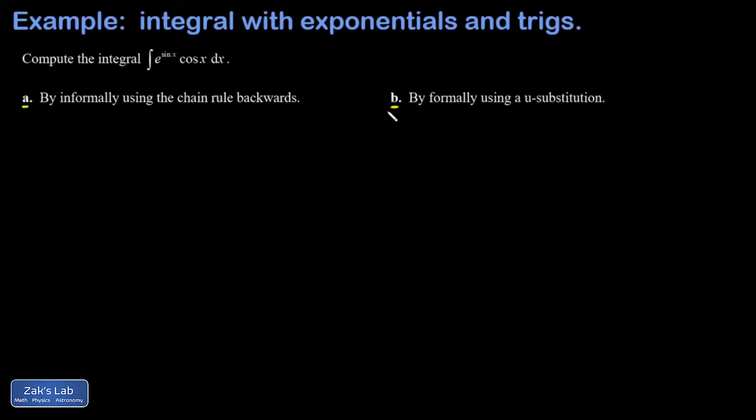And that formal u substitution, usually what it's about is just recognizing the results of the chain rule and using it backwards. So informally, the key here is to recognize a function of a function.